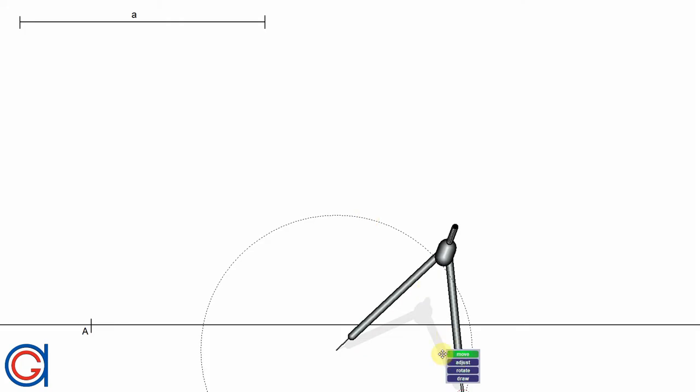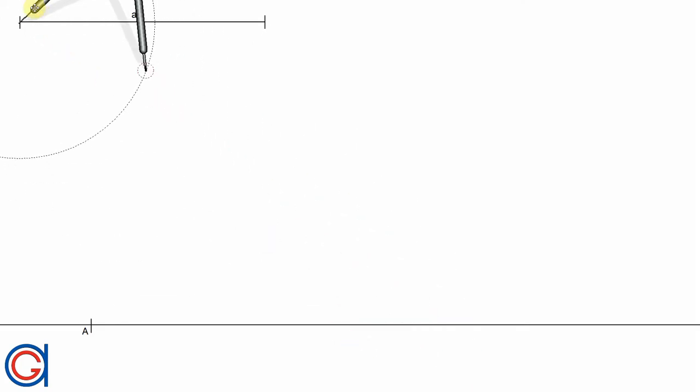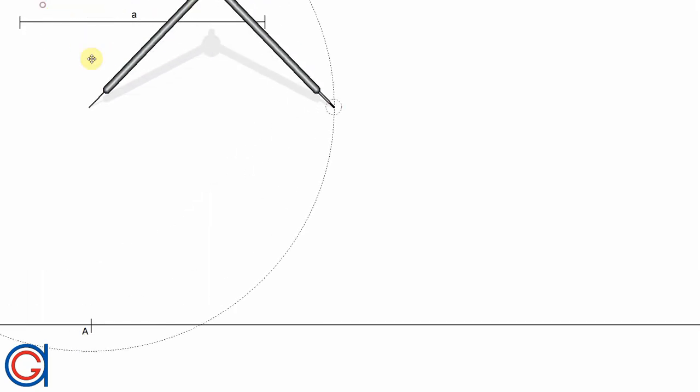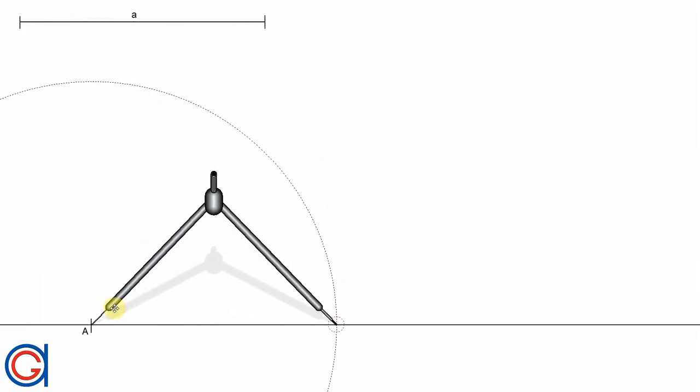Now setting the compass to the length of the given side A, we are going to transport it onto the horizontal line starting at point A. So setting the compass on point A, we scribe an arc obtaining a new point P, as can be seen here.